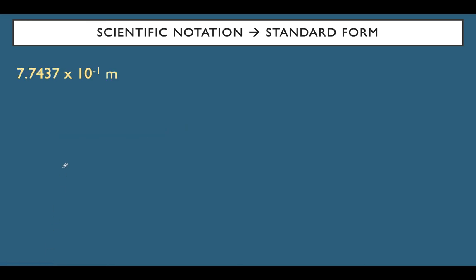Next question — this is the first time we have a negative exponent going to standard form. The negative exponent means we are going to make 7.7437 smaller by one decimal place, so I get 0.77437 meters.